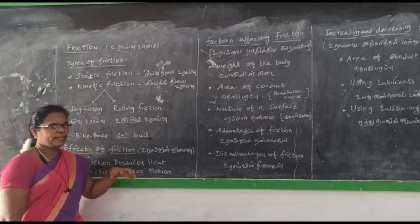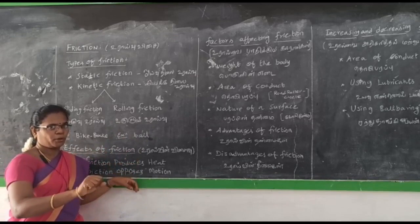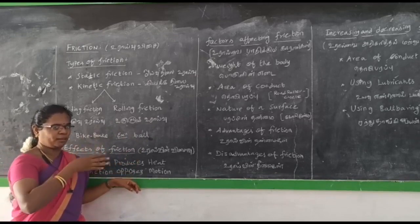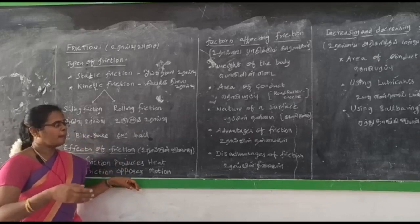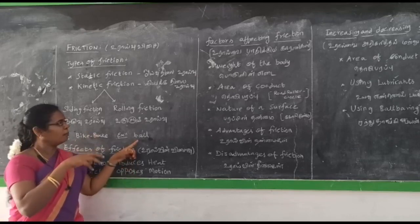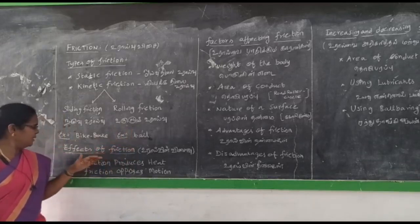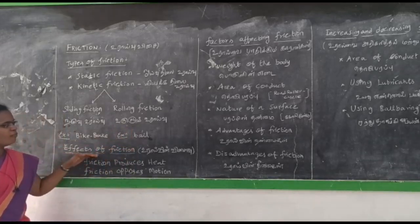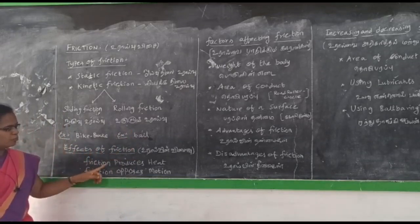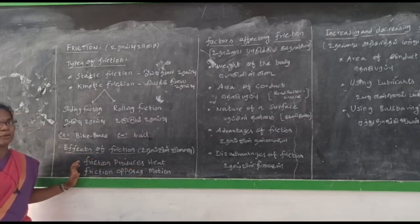If we have the bike, we rotate it. We are going to change the task. If we have the bike, we will move the bike. After the effect of friction, the friction is produced. If the friction is produced, the body will produce.